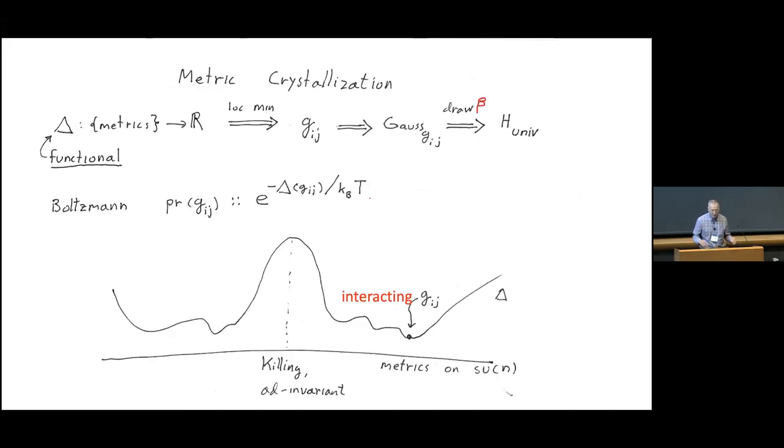So I'll be discussing what I'd like to think of as metric crystallization. And the reason I call it that is because crystallization is a beautiful example of symmetry breaking, of some homogeneous thing like chlorine and sodium, and turns into a salt crystal and crystallizes. And in this story, what we'll do is we'll start with a functional delta on metrics.